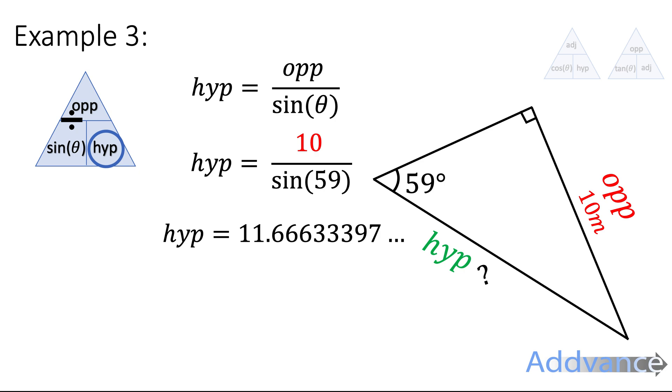And we know that 10 divided by sine 59 is going to be the hyp. Type that in and you get 11.6633 centimeters, or meters here, because it is in meters, and get 11.7 meters. That is the final answer. Again, just make sure you can type that into your calculator and get the exact same numbers that I do.